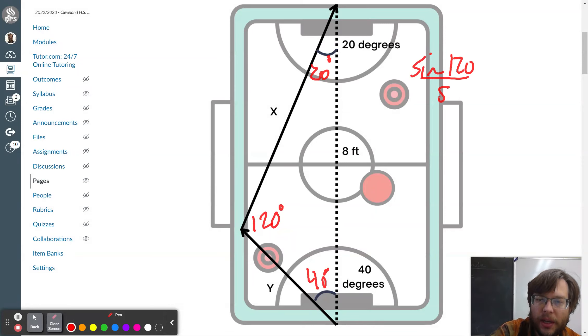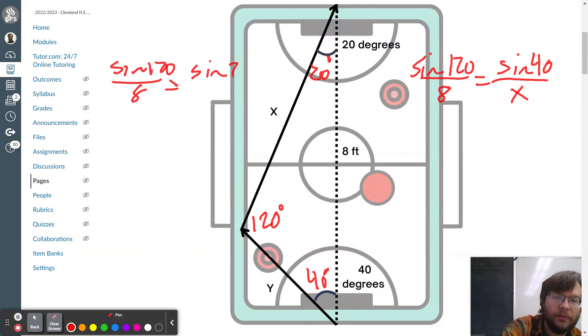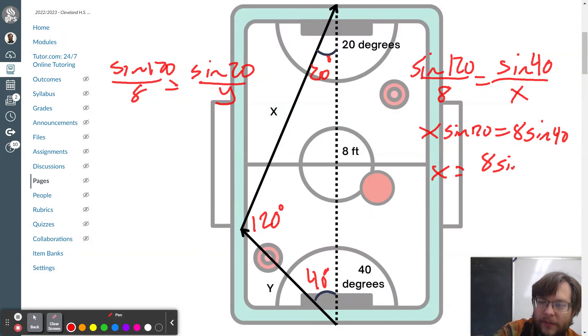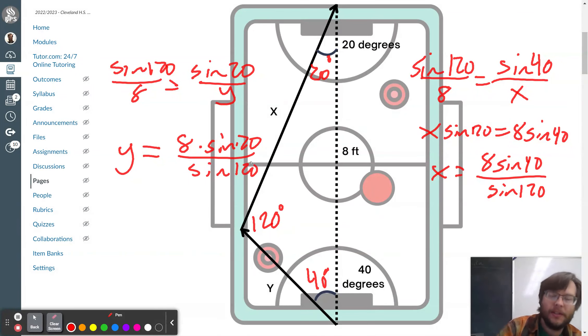There's 8 feet. So I can use law of sines and do sine of 120 over 8 equals sine of 40 over x. I can also do sine of 120 over 8 equals sine of 20 over y. It's nice sometimes when you're doing law of sines to do them both at once, because they're going to come out to be basically the same structure for each of them.